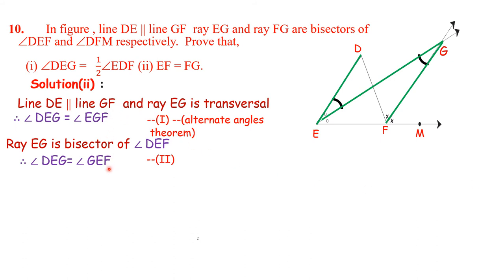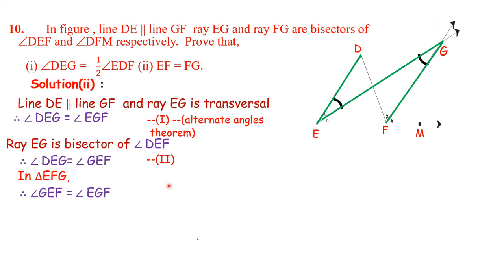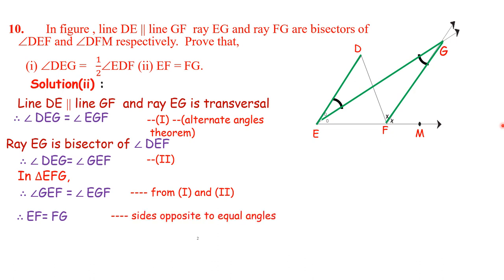Now observe these two statements. From statements 1 and 2, angle DEG equals angle EGF and angle DEG equals angle GEF. Therefore in triangle EGF, angle GEF is equal to angle EGF. Therefore EF is equal to GF — sides opposite to equal angles.